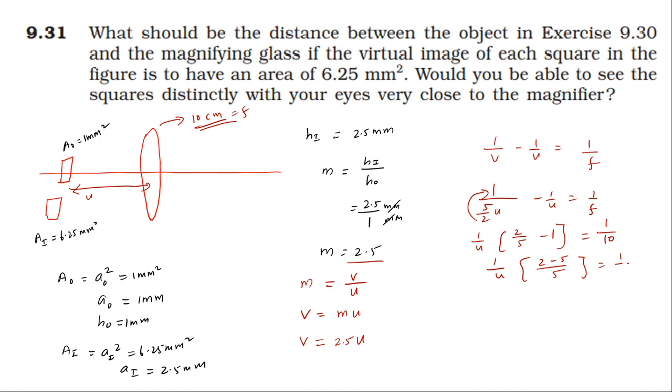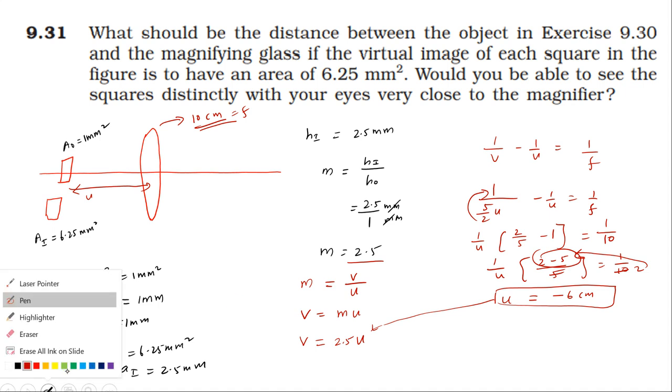2/5 minus 1 is 2 minus 5, which is -3. So -3/(5u) equals 1/10. Therefore u equals -3/5 times 10, which is -6 centimeters. The u value is -6 centimeters. Now v equals 2.5 times u, which is 2.5 times -6, so v equals -15 centimeters. The image is on the same side as the object, hence the minus sign.